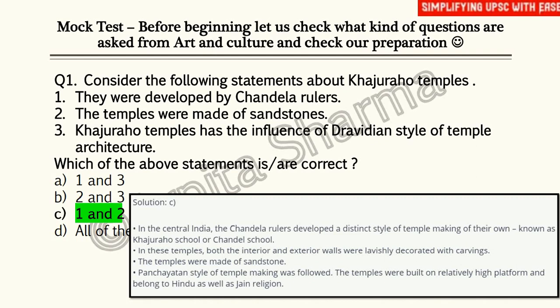That means Khajuraho temples were developed by Chandela rulers, they are made up of sandstones, and they are built on a relatively high platform. Basically, the Panchayatan style of architecture has been used while making these temples — that we will study in the Art and Architecture class. Don't worry about it now.